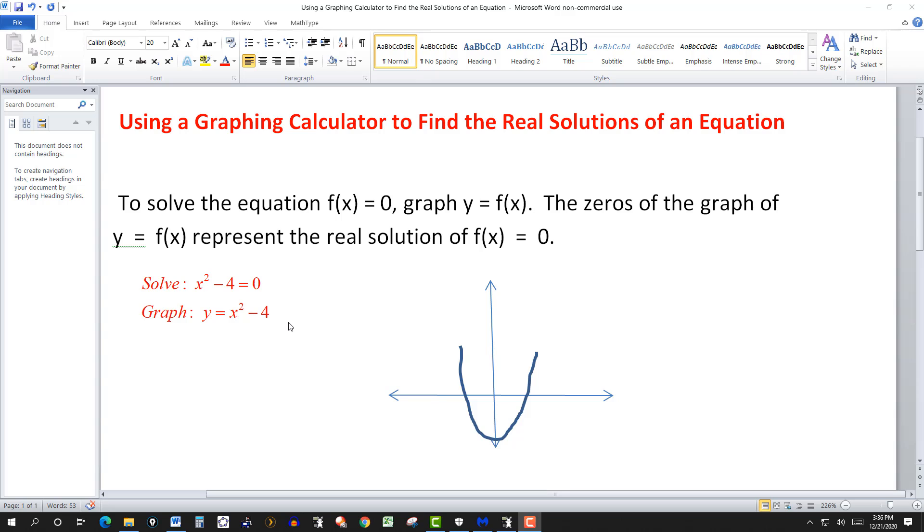And the solution for that is 2 and -2. So this point over here would be the point (2, 0), that's an x-intercept. And this point on the other side, opposite that, would be the point (-2, 0). So -2 and 2 then are the first components of the x-intercepts. Those are also called the zeros of this function or of the graph. So that's your solution.